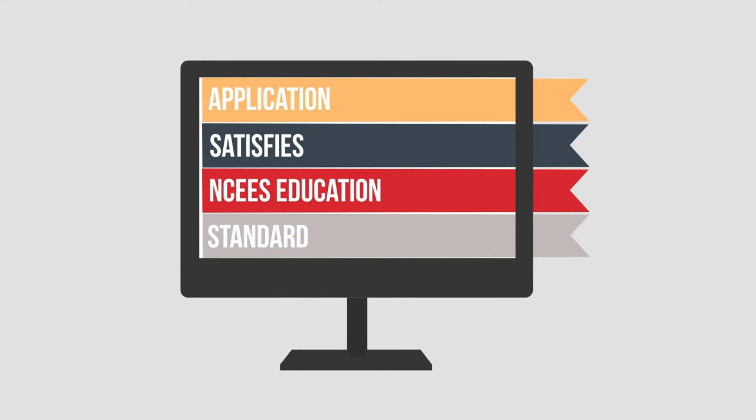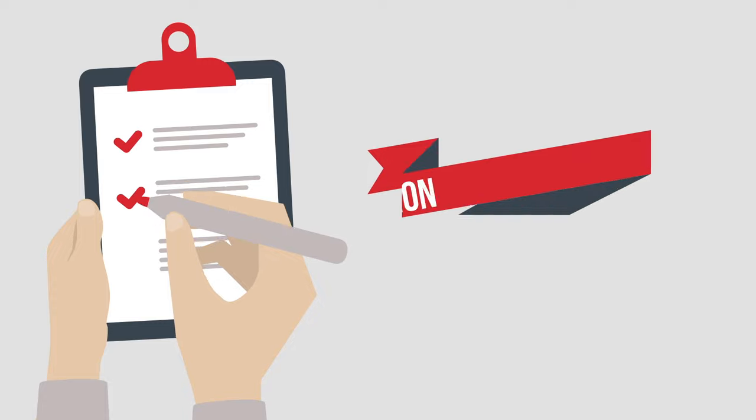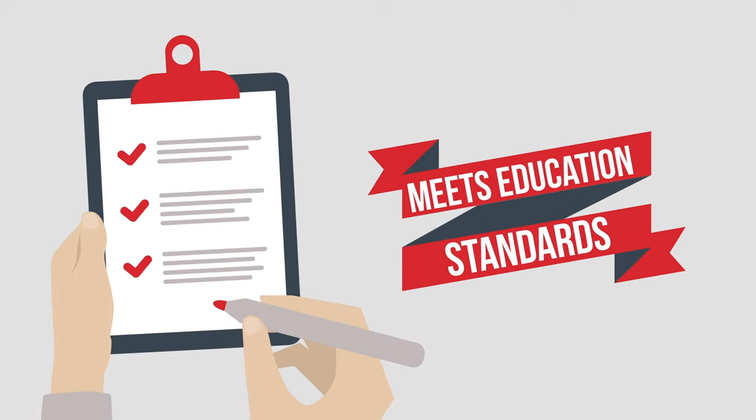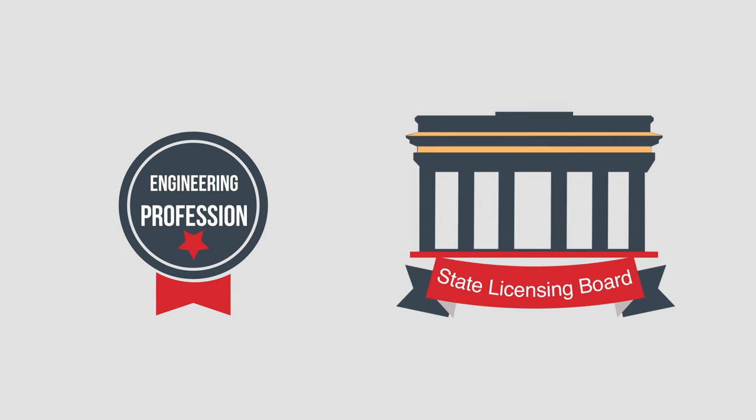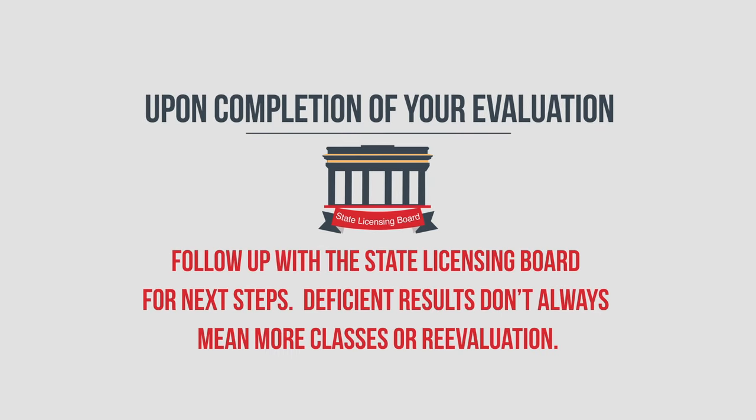For applicants whose educational record indicates satisfaction of the NCEES standard, NCEES will report that the applicant possesses the education required to be considered by a member board for entry into the professional practice of engineering. In the event that your state licensing board determines that your education does not meet their criteria — for example, if the report shows deficiencies — they may require that you address those deficiencies and undergo re-evaluation within CES. To do that, communicate with your assigned evaluator, who will guide you on which courses are appropriate.